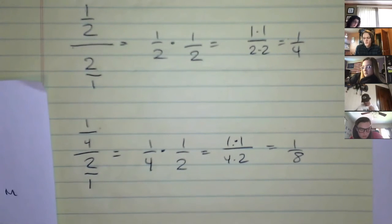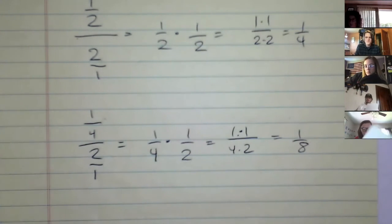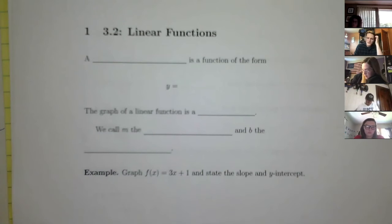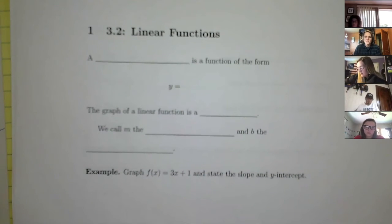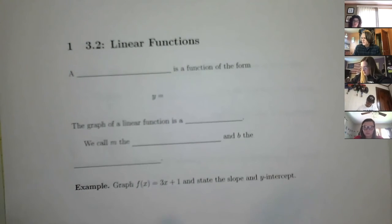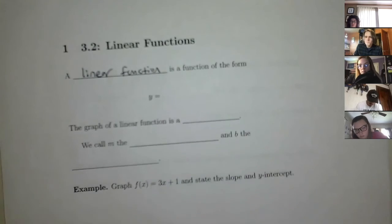That's the end of 3.1. The whole premise of 3.1 was to set down notation for functions, make sure you're comfortable with independent and dependent variables, comfortable with plotting simple functions, and introduce linear and exponential growth. Now in 3.2 we're going to get a little deeper into linear functions. A linear function is a function of the form mx plus b.